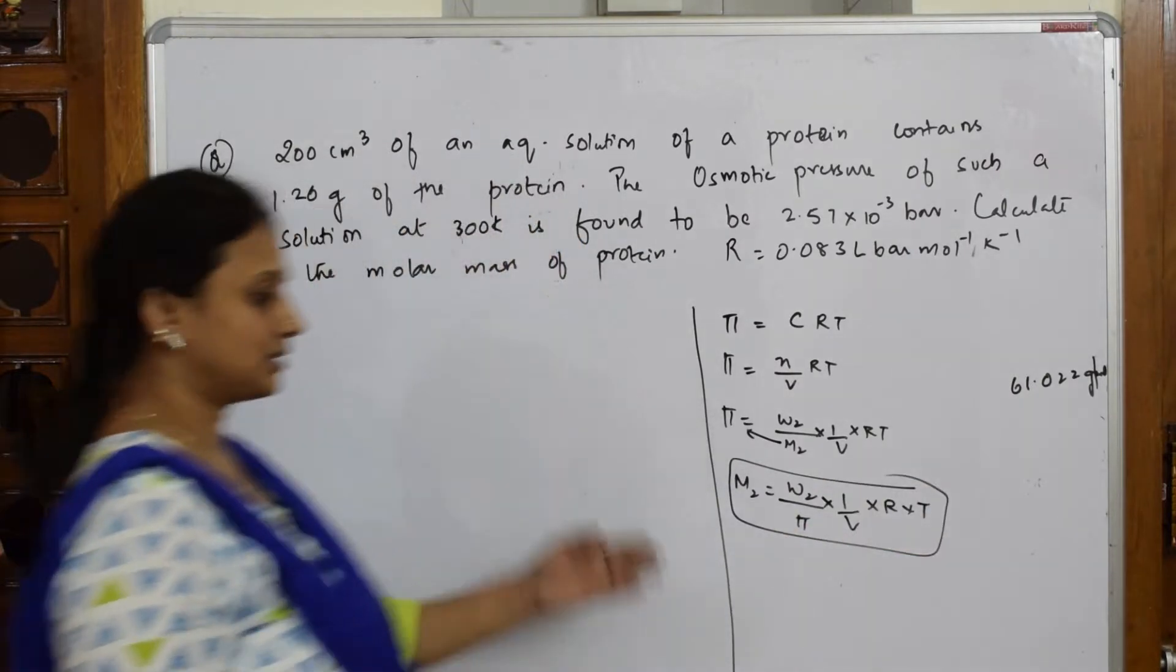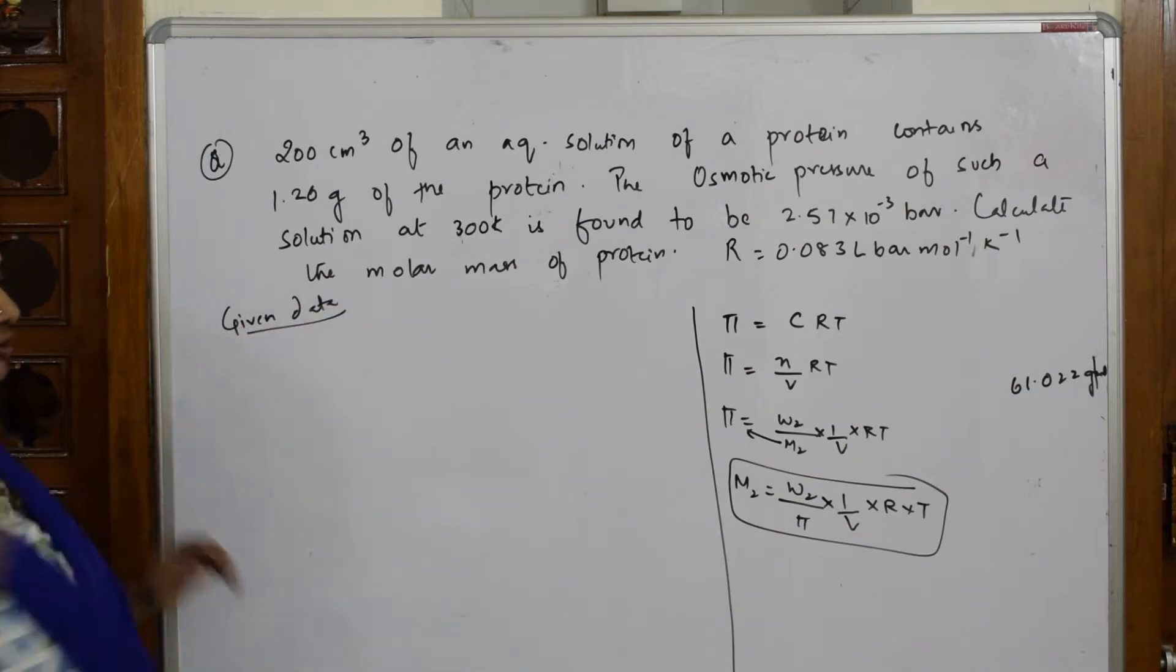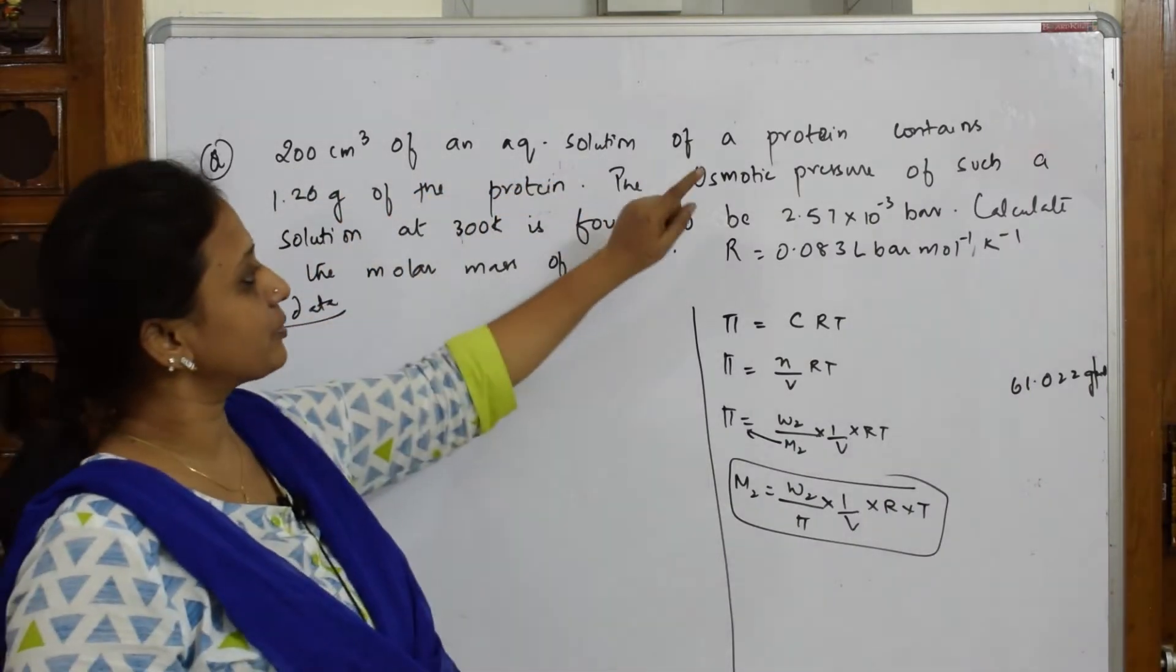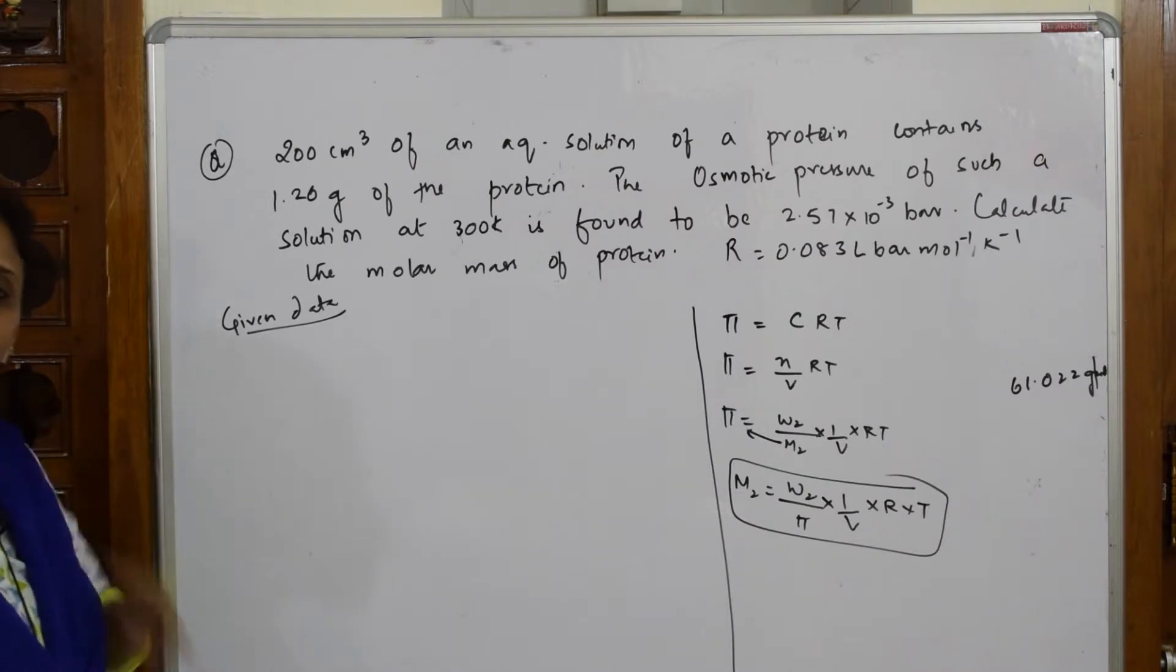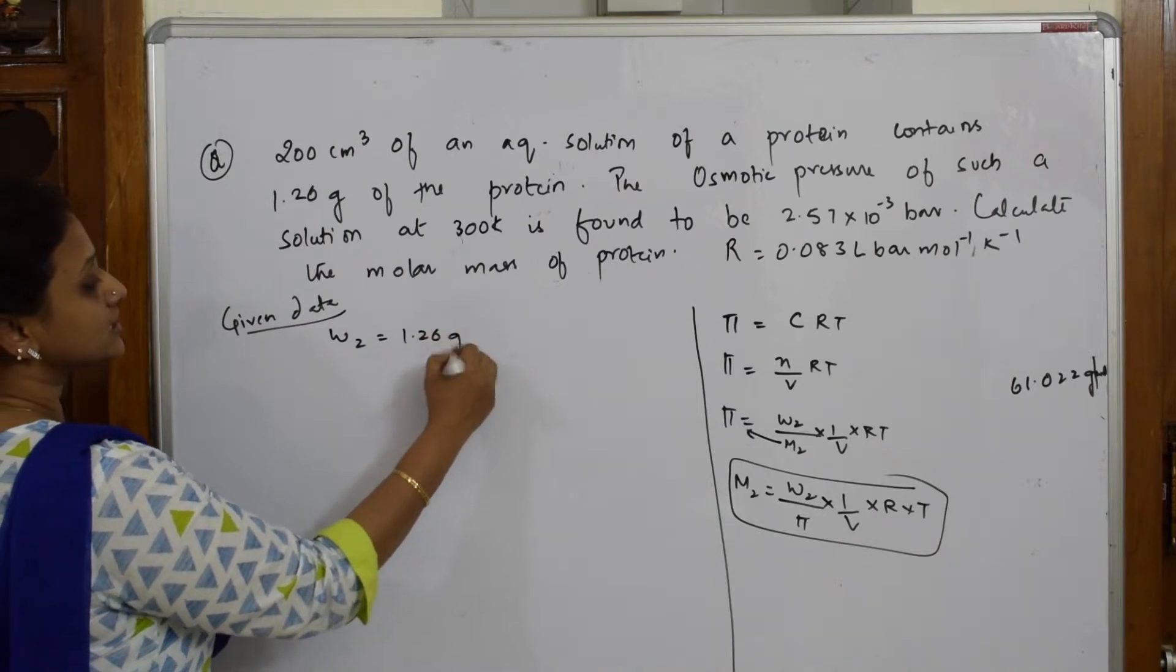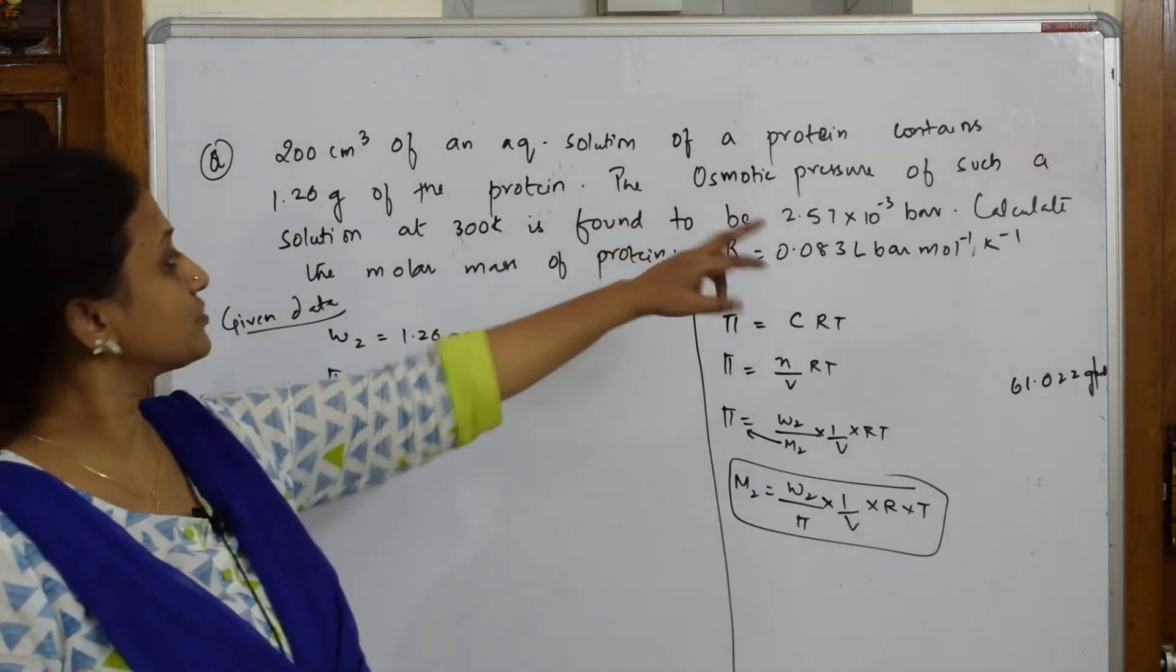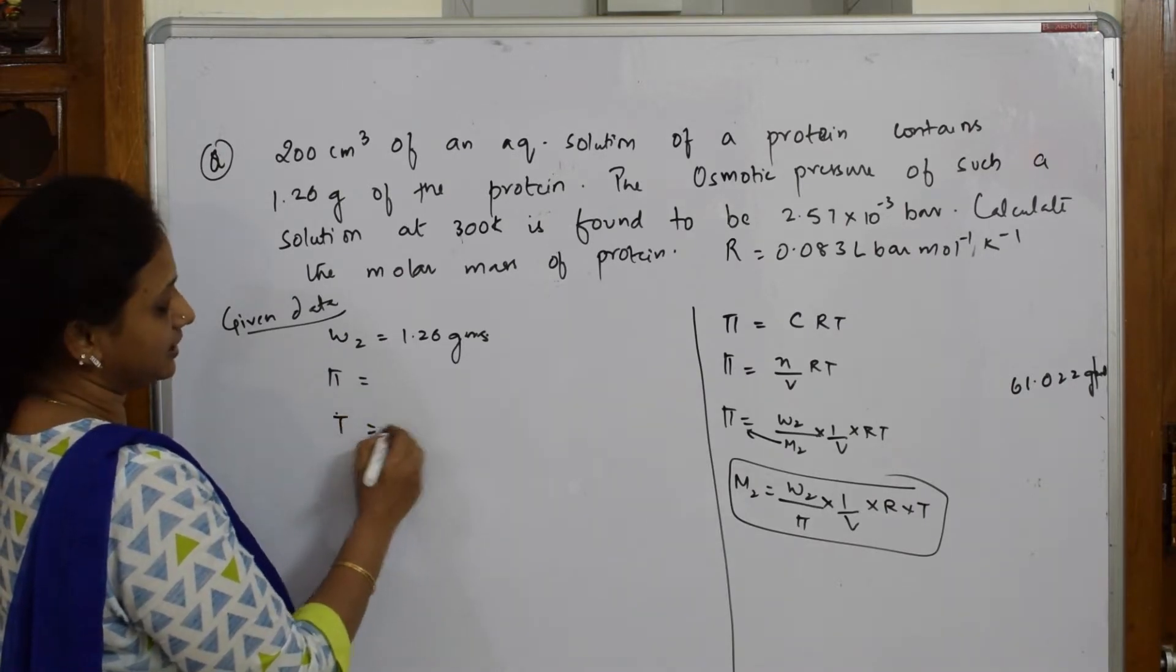Let us write the given data. What is given to me? w2, weight of the solute - 200 centimeter cube of an aqueous solution of protein contains 1.26 gram of the protein. Okay, they've given weight of the solute which is equal to 1.26 grams. Pi, osmotic pressure is given to me. The osmotic pressure of such a solution at 300 kelvin. T is given to me, 300 kelvin.